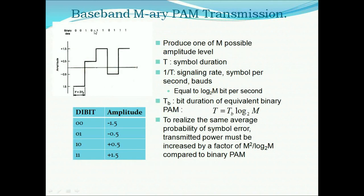Baseband M-ary PAM transmission produces 1 of M possible amplitude levels, where Ts is the symbol duration, 1/Ts is the signaling rate in symbols per second, equal to log₂(M) × (1/Tb), and Tb is the bit duration of the equivalent binary PAM.